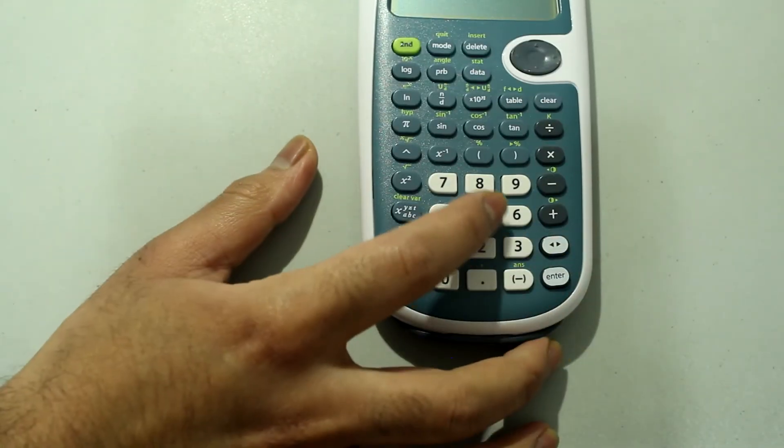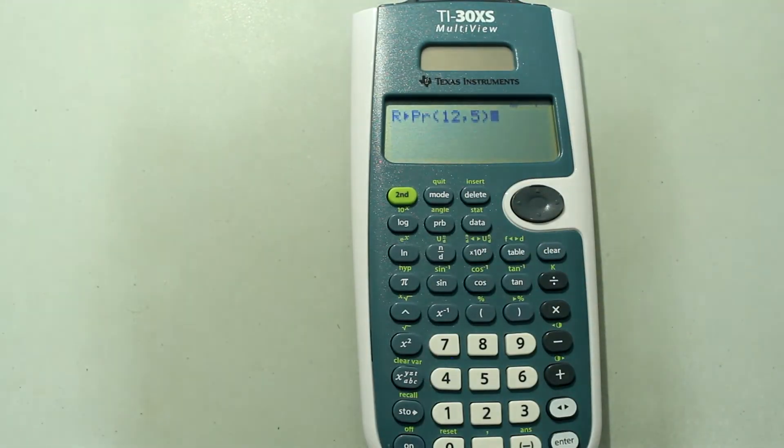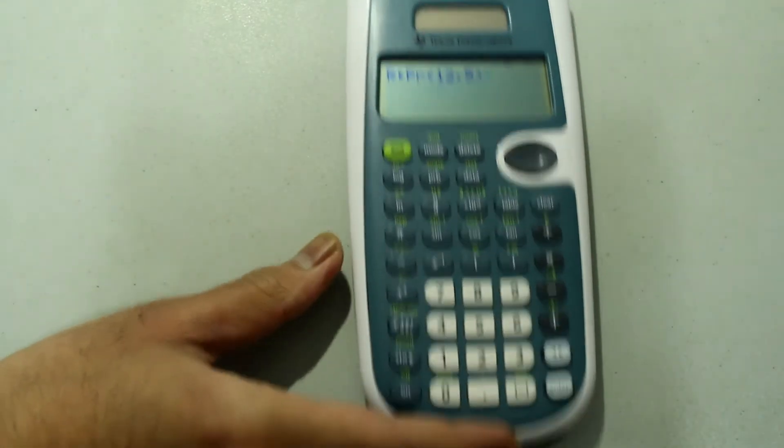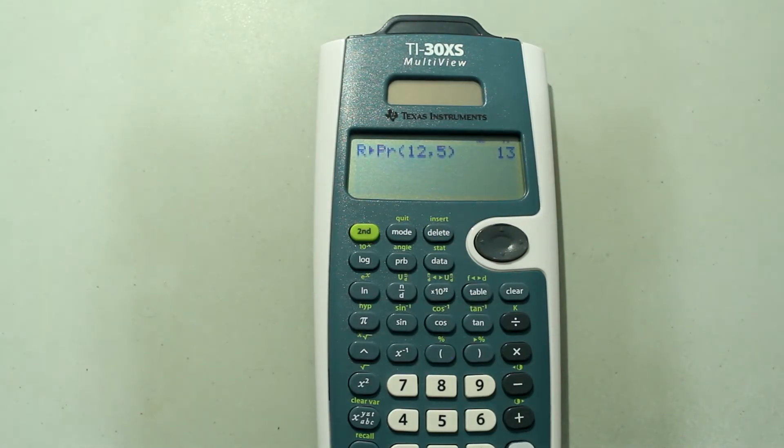So far I have this, and now you need to type in the y value on the number pad, which is 5, and then just close off the parentheses, and we have this so far. And press ENTER. And that gives you the radius value.